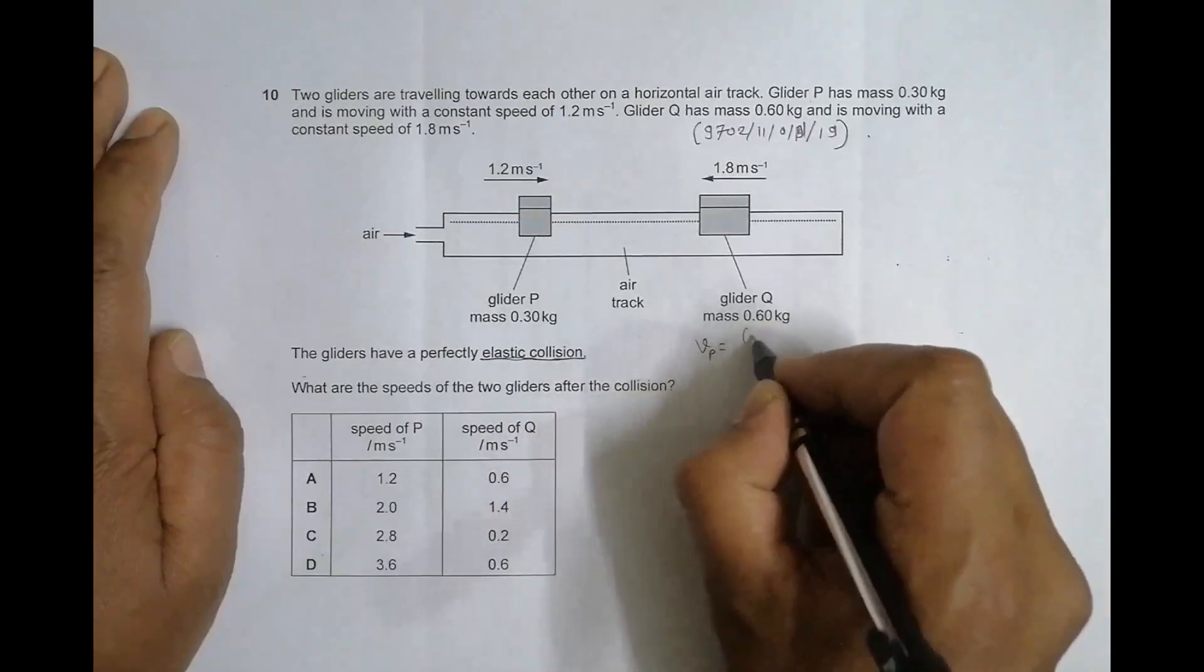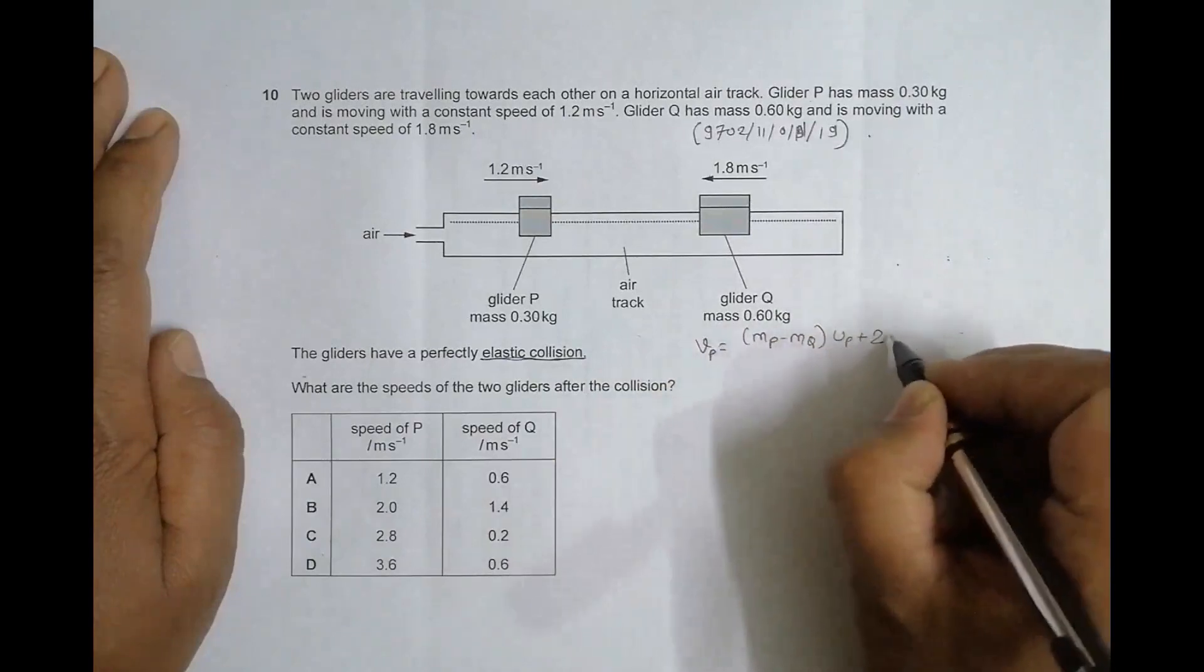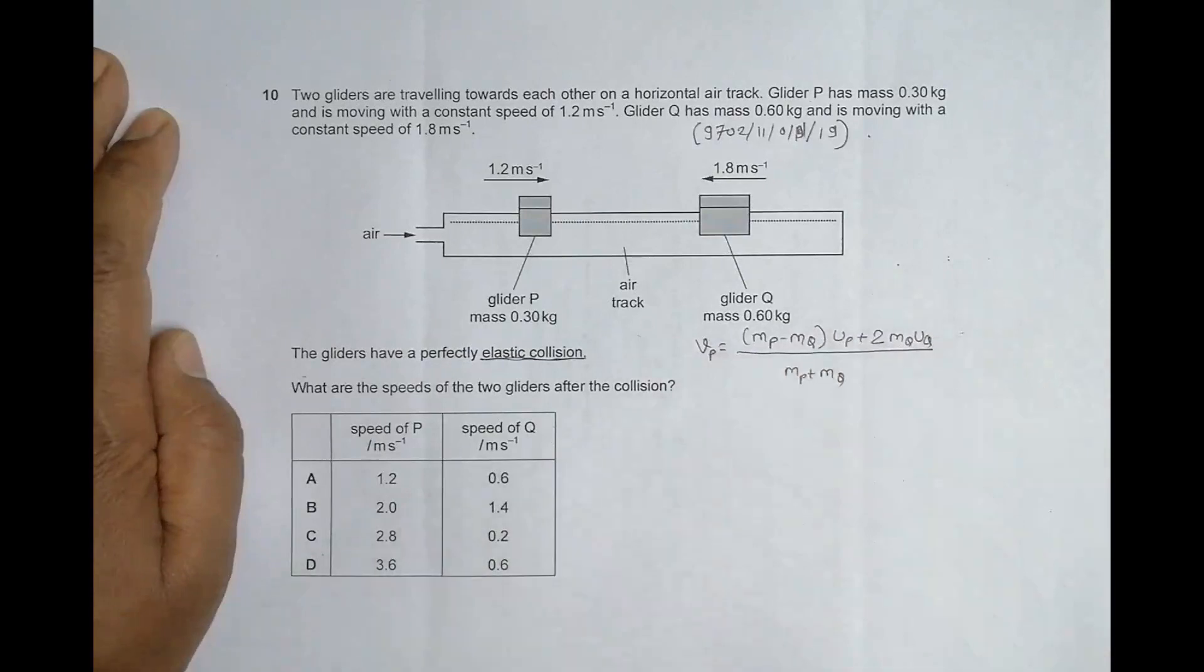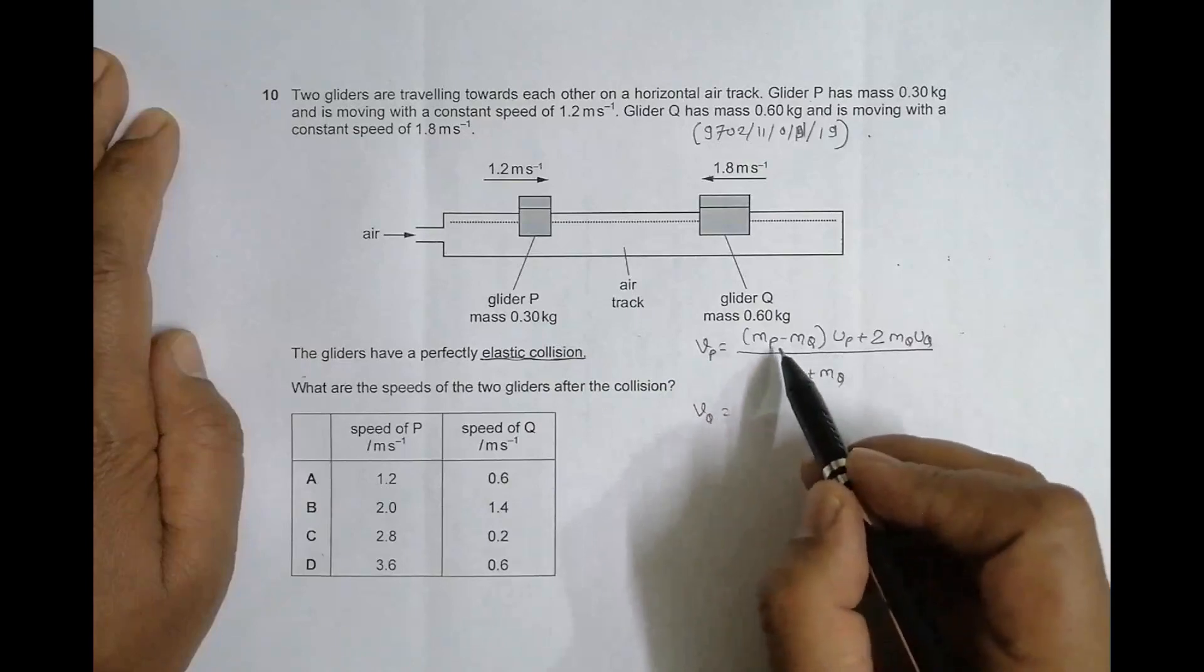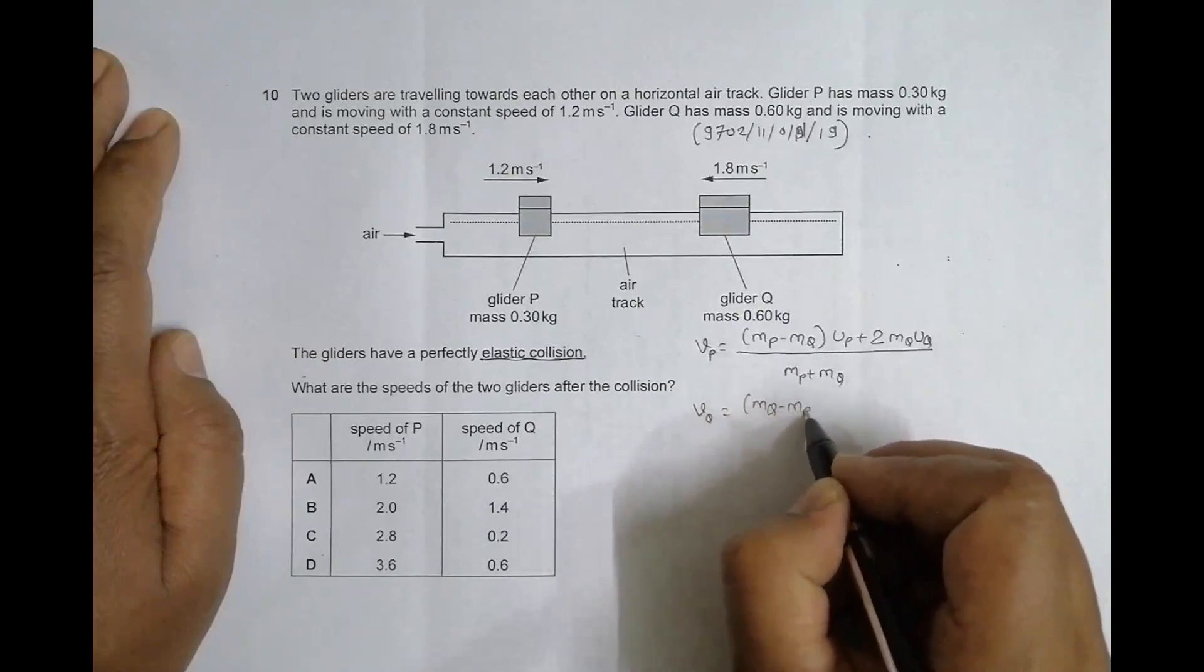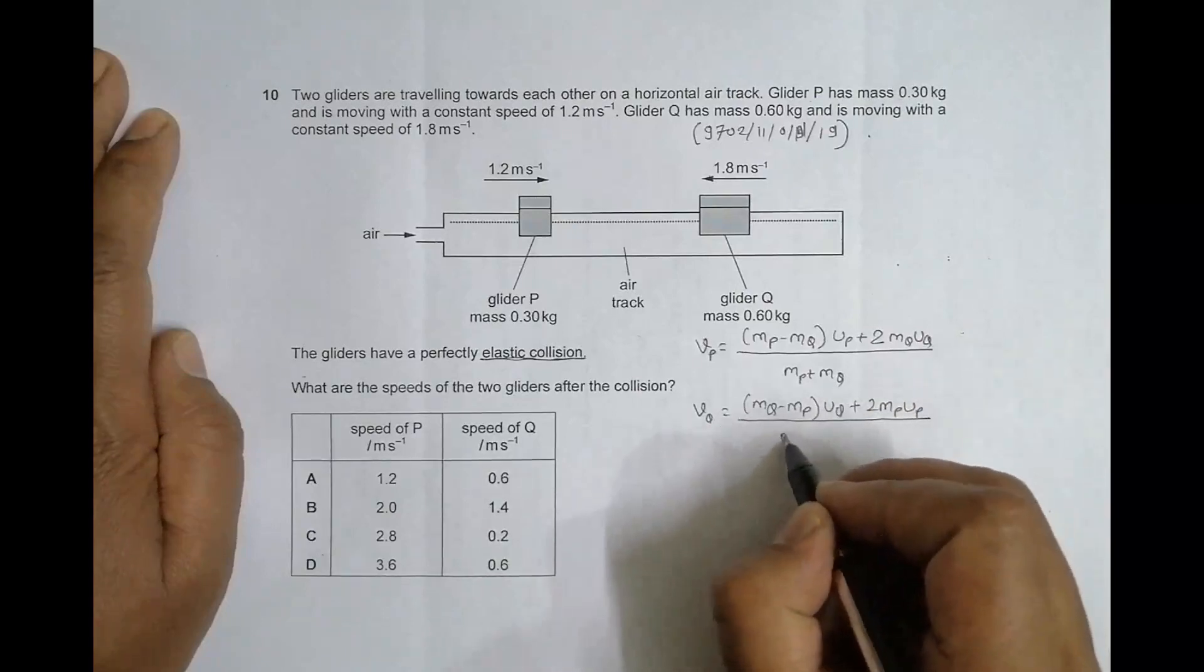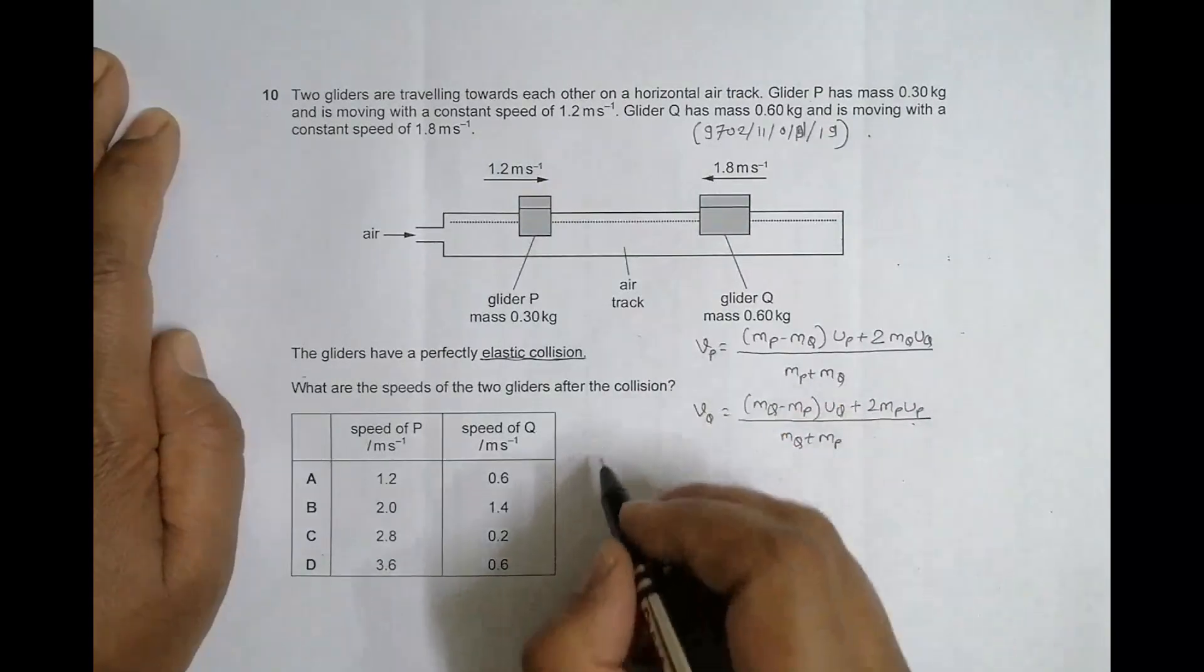The final velocity VP will be equal to (MP minus MQ) times UP plus 2MQ times UQ, whole divided by MP plus MQ. And for VQ it will be (MQ minus MP) times UQ plus 2MP times UP, whole divided by MQ plus MP. Just replace P by Q and Q by P.